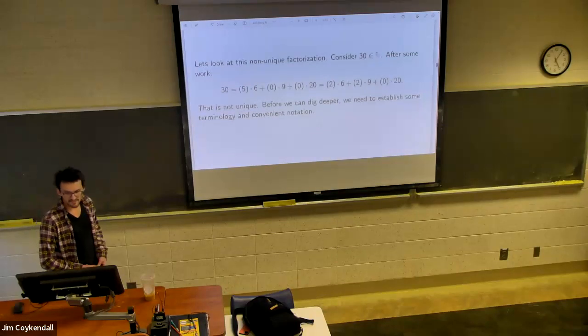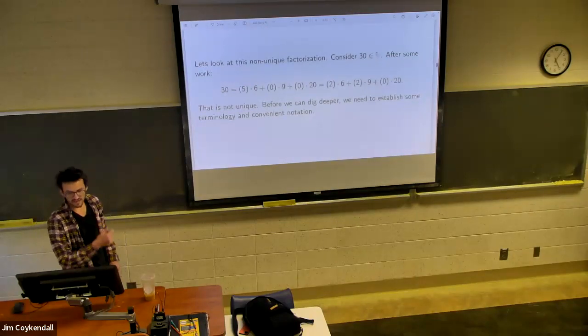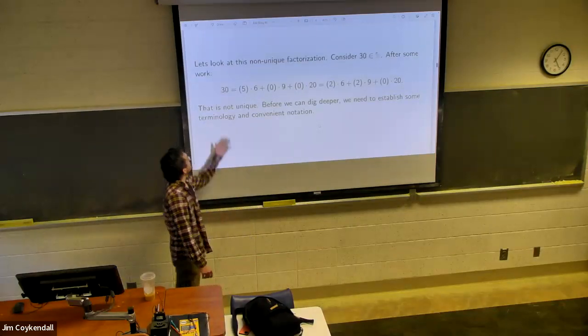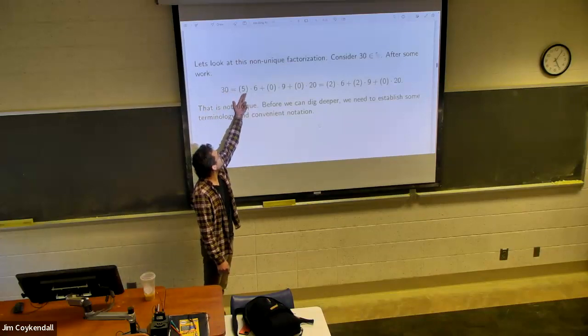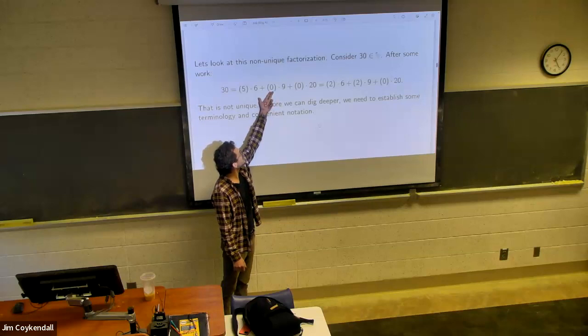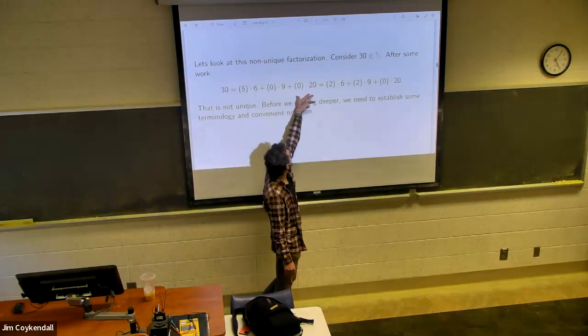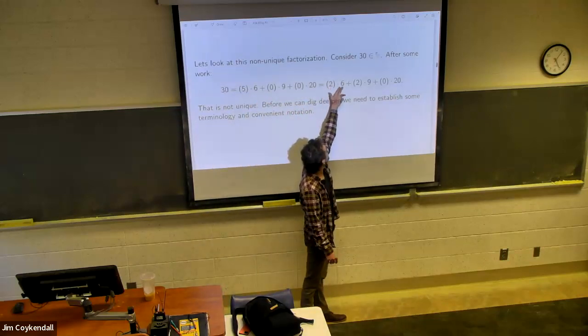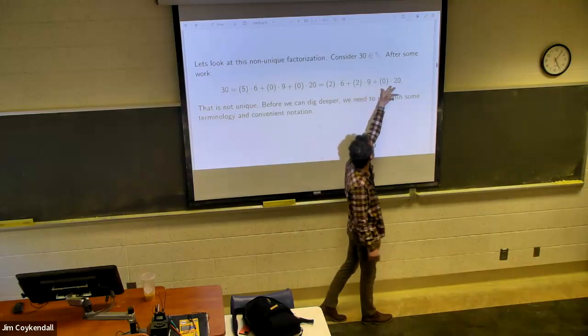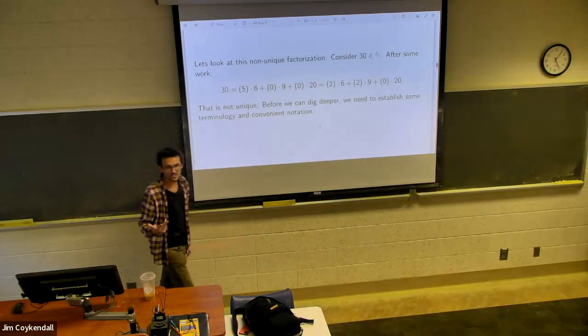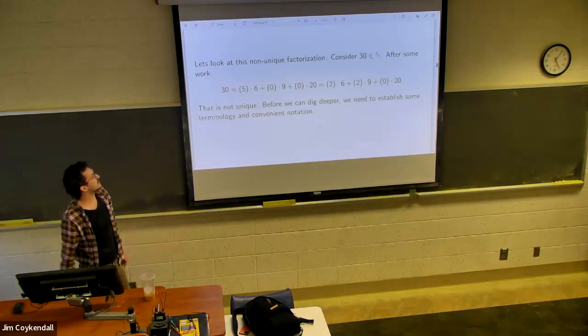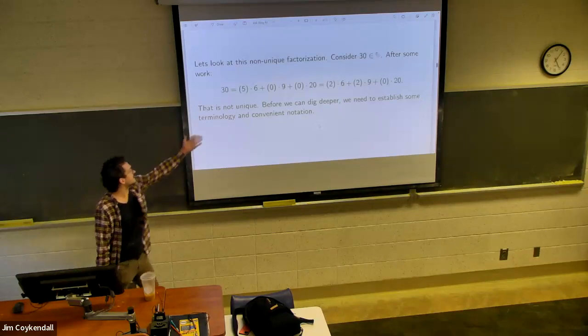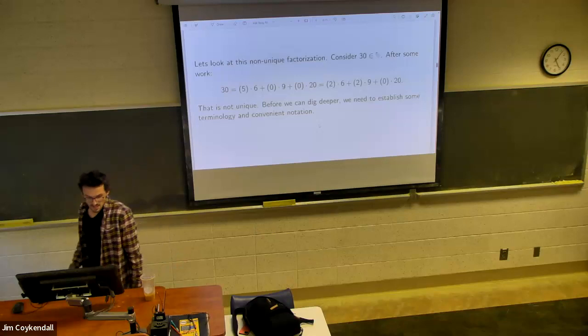So let's look at some of this non-unique factorization. So if we look at the element 30 that's in our chicken monoid here, we can do 5 copies of our 6. We can do 0 copies of our 9 and 0 copies of our 20. You know, 5 times 6 is 30. We can get 2 copies of the 6 generator, 2 copies of the 9 generator, 0 copies of the 20 generator. So these are two different ways you can arrive at 30 chicken McNuggets.